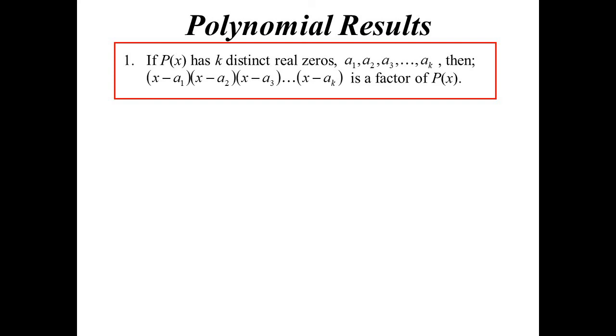So the first one, here we go. If we know a polynomial has k different zeros, let's call them a1, a2, a3, up to ak, then each of those would produce a linear factor by the factor theorem.